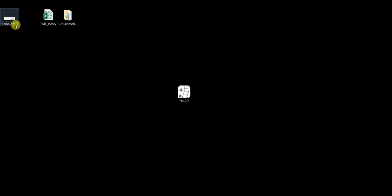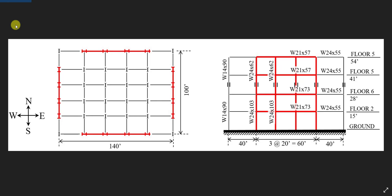Let's take a look at the example building we are going to model. It has a rectangular plan view with dimensions of 140 feet by 100 feet. In the east-west direction — the direction we will consider for analysis — the elevation shows a four-story building with bay widths and story heights visible. The moment resisting frame is shown in red as the main lateral load resisting system, and in black are the gravity beams and gravity columns.